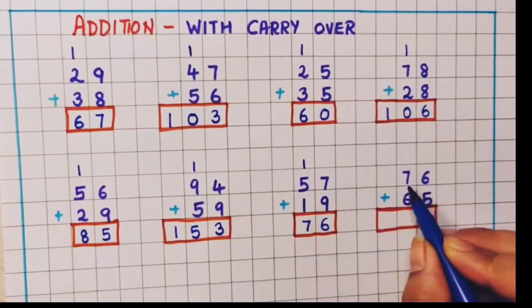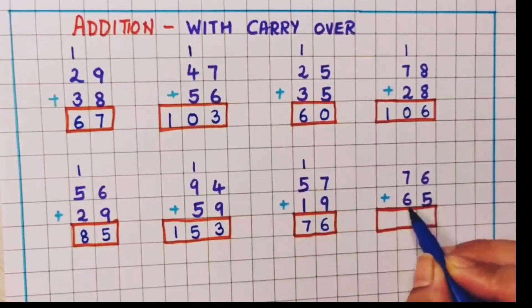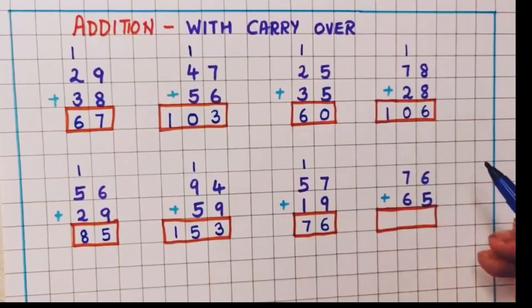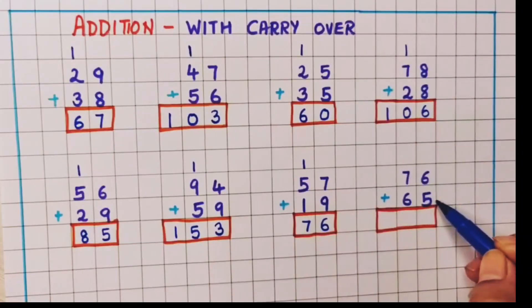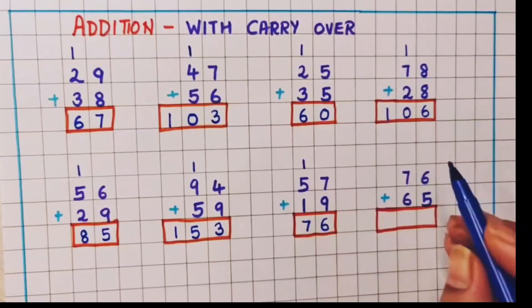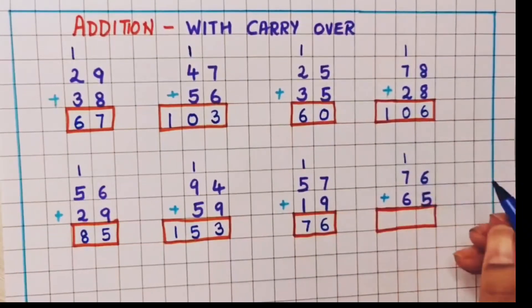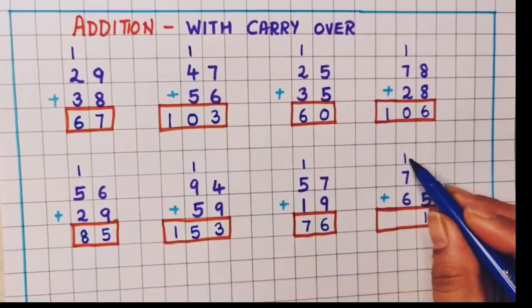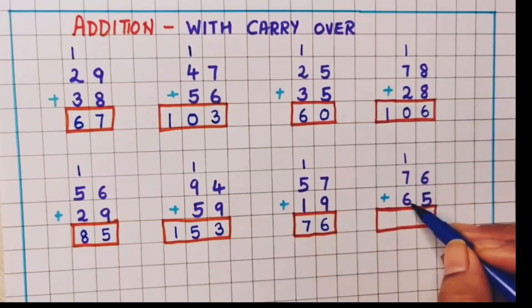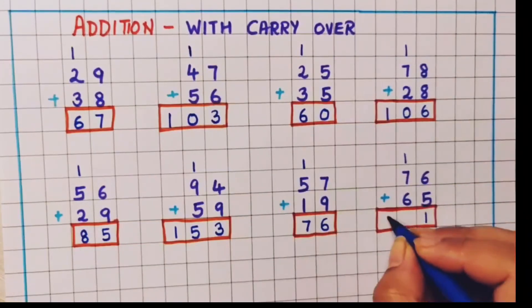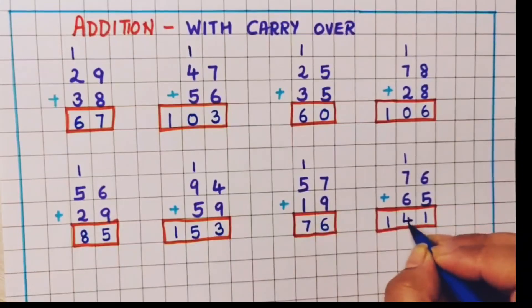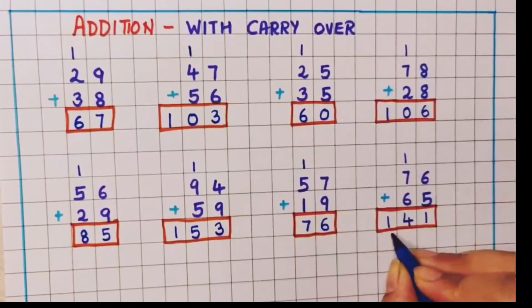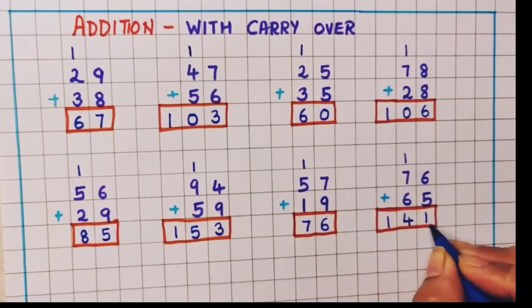Next problem: 76 plus 65. So 6 plus 5 is 11 — 1 will go as a carry over and 1 will come down. 7 plus 1 is 8 and 8 plus 6 is 14. So I will write 1 here and 4 here. The answer is 141.